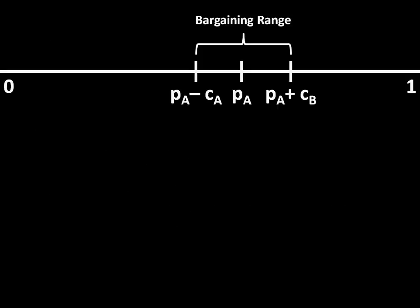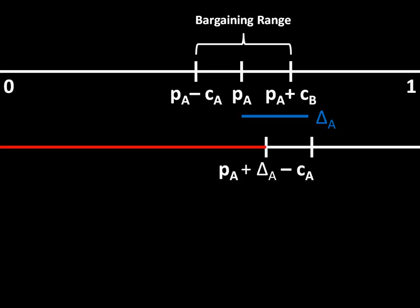To see this visually, we refer back to the bargaining range from the geometric model. We need to add each side's first strike advantage. A's first strike advantage is sized delta A, shown as a blue line. Adding delta A to A's probability of victory shifts that probability over, and after subtracting the costs of fighting we get PA plus delta A minus CA. This red line represents how much A expects to receive if it preempts — delta A more than it would expect under normal war circumstances. If A is willing to sit down at the bargaining table, it must receive at least this much.